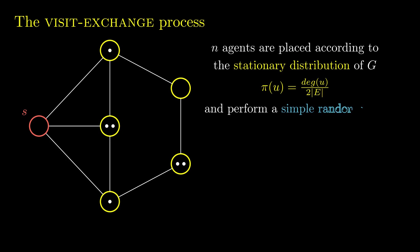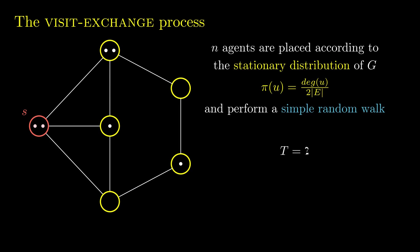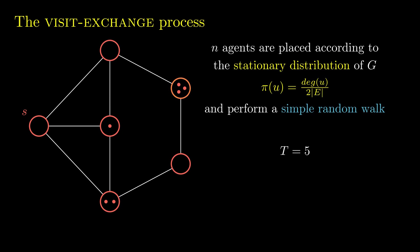The agents then perform a simple random walk synchronously. When an agent visits an informed vertex, it becomes informed. And when an informed agent visits an uninformed vertex, the vertex becomes informed. One can think of the process as a virus spreading in a moving population where both the population members and the environment can become infected and there is no recovery. The broadcast time is the number of rounds until all vertices become informed.